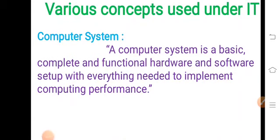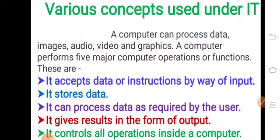With the help of a computer system we can perform various operations. A computer can process data, images, audio, video, and graphics. A computer performs five major computer operations or functions. Basically a computer can process images, audio, video, graphics, and data as input.